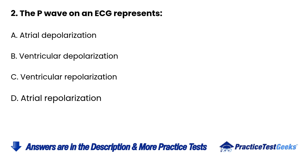2. The P wave on an ECG represents: A. Atrial depolarization. B. Ventricular depolarization. C. Ventricular repolarization. D. Atrial repolarization.